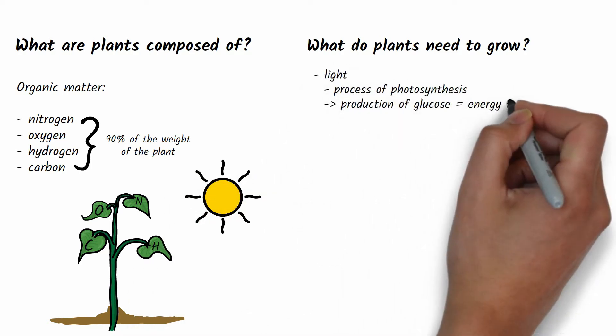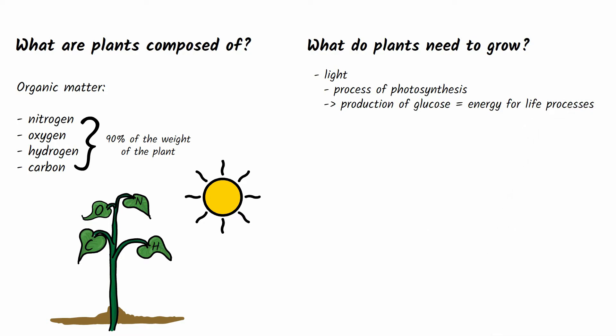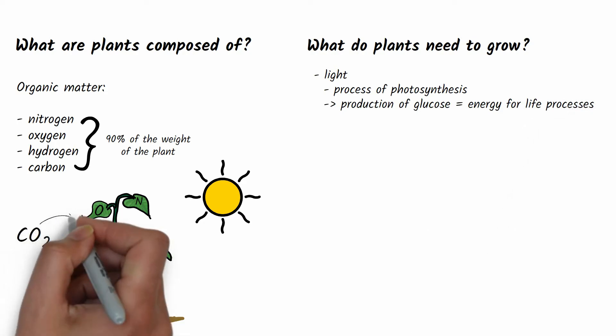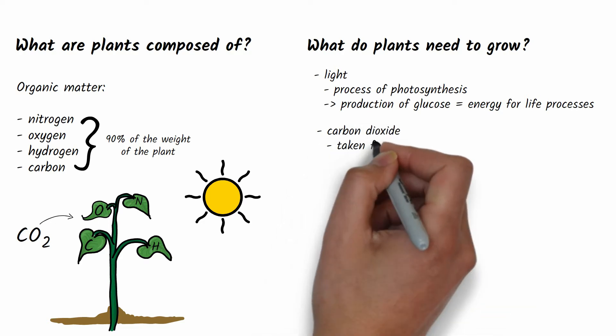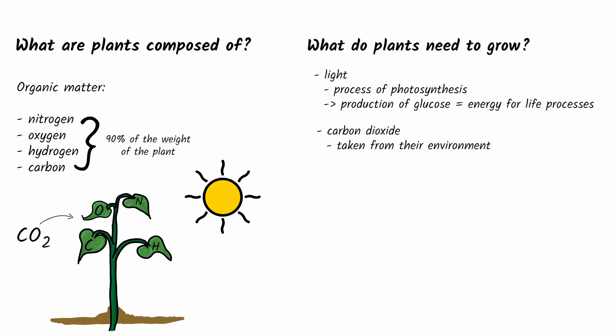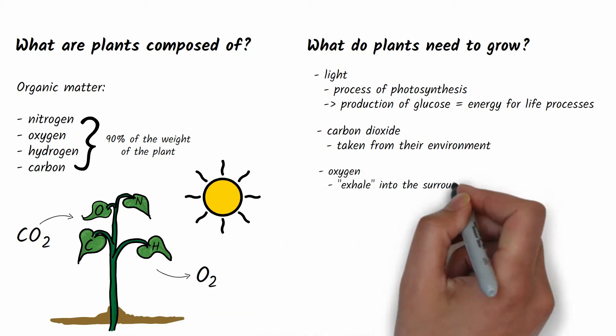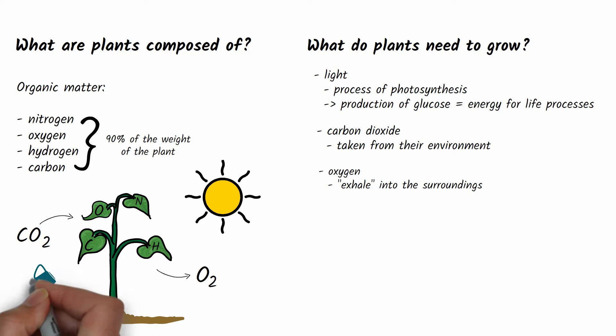In order to grow, plants need the following elements: light to carry out the process of photosynthesis, which produces glucose and thus provides energy for the plant's life processes. During photosynthesis, plants take carbon dioxide from the environment and return oxygen as a waste product.